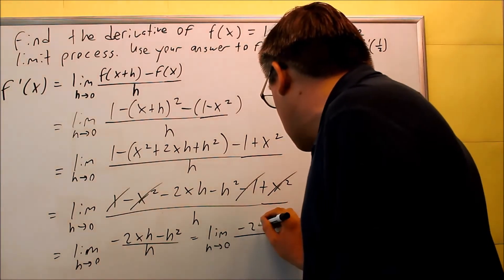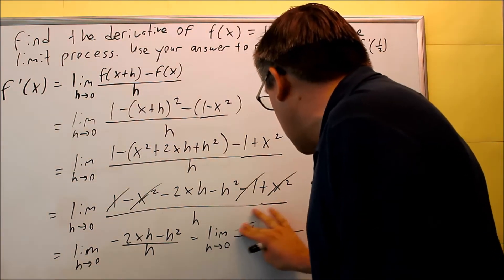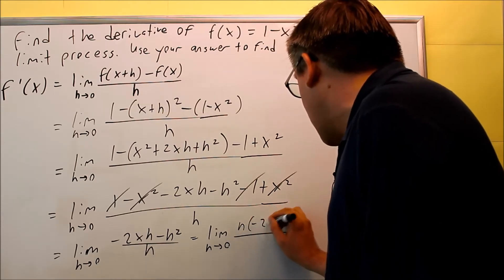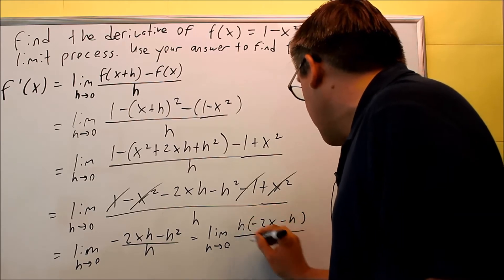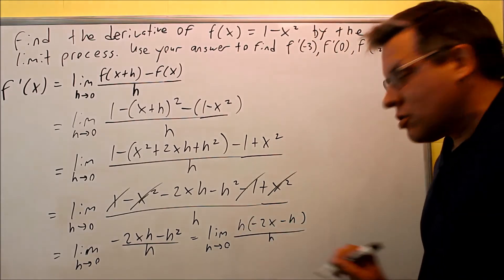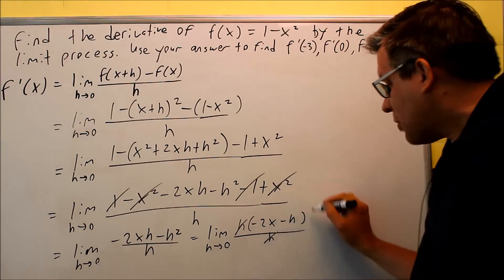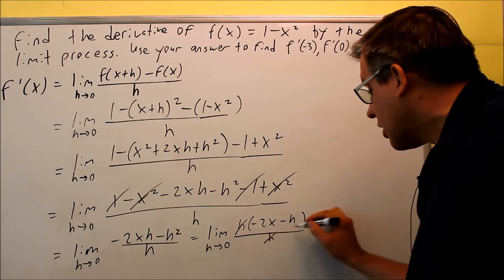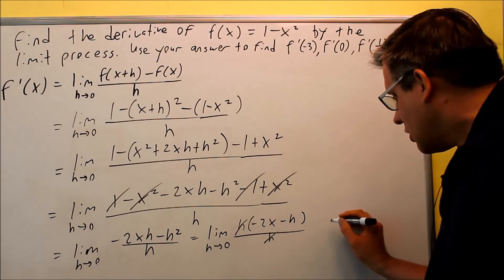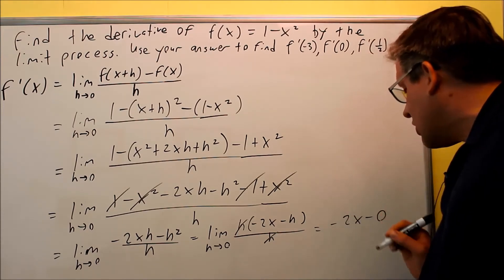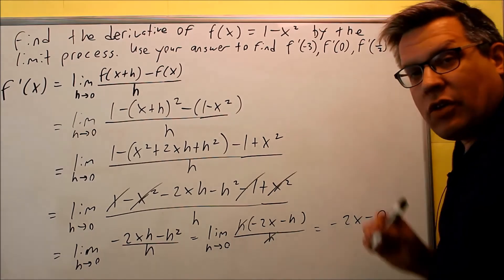So we're going to do this: I'll put the h out first, so we're going to do h times negative 2x minus h on the top, and h on the bottom. Both of these h's are going to cancel out. Now what you're left with, you're going to put a 0 in there for the h. That's going to leave you with negative 2x minus 0, which equals negative 2x.